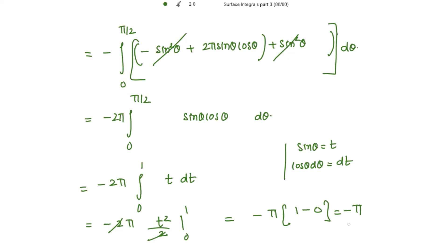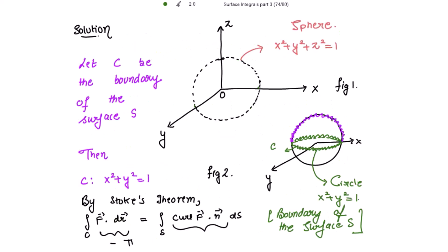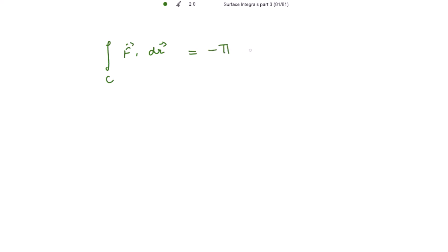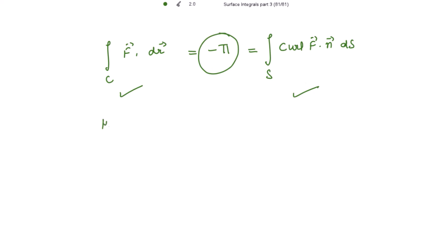So the surface integral of curl f dot n vector ds also equals −π. We have obtained the right-hand side of Stokes' theorem to be −π as well. Hence, the line integral of f dot dr = −π equals the surface integral of curl f dot n ds = −π. As both sides of Stokes' theorem are equal to −π, Stokes' theorem is verified for the given function f. Thank you, stay blessed.